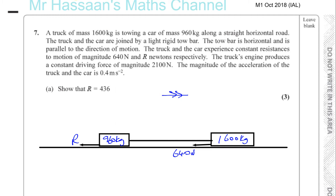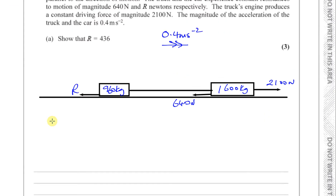The truck's engine produces a constant driving force of 2,100 newtons. The magnitude of the acceleration of the car and the truck is 0.4 meters per second squared. We have to show that R is equal to 436.